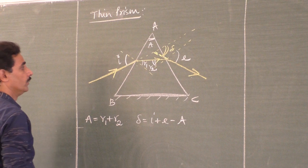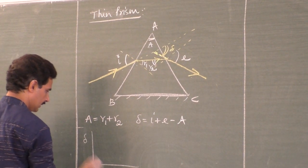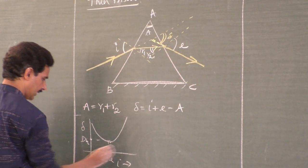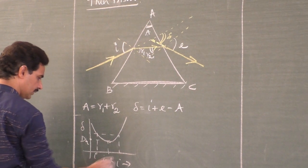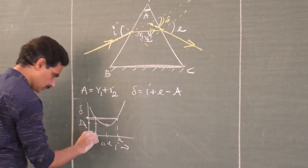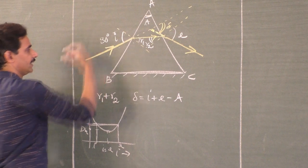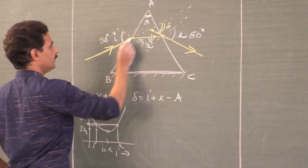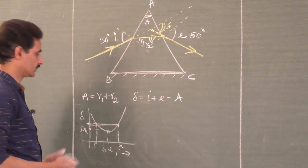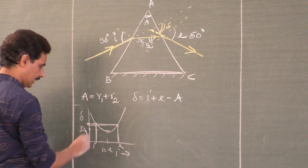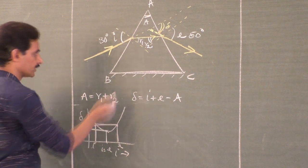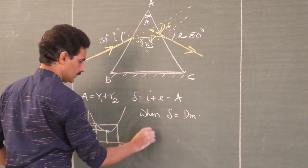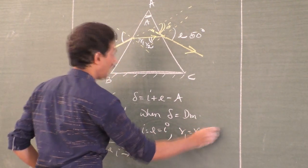As the angle of incidence is increased, delta keeps on decreasing, reaches a minimum value and then increases. At this position, this is called angle of minimum deviation, dm. Now i and e are the same. For any other angle of deviation, you have i and you have e. This angle of deviation is obtained for two angles of incidence. Suppose this is 30 — the deviation is say 15 degrees. If this is 50, then again the deviation is 15. So there are two angles of incidence, but for minimum angle of deviation there is only one angle because both become equal.